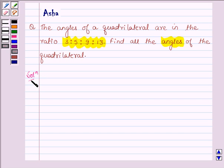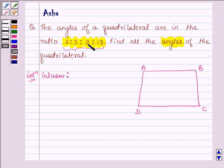So let us begin with the solution. Let ABCD be the required quadrilateral. Then we are given that the angles of the quadrilateral are in the ratio 3:5:9:13.